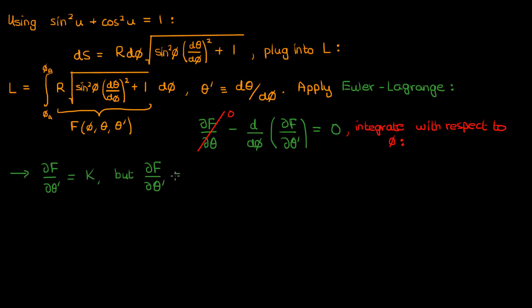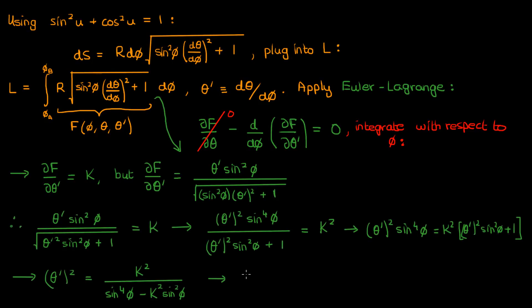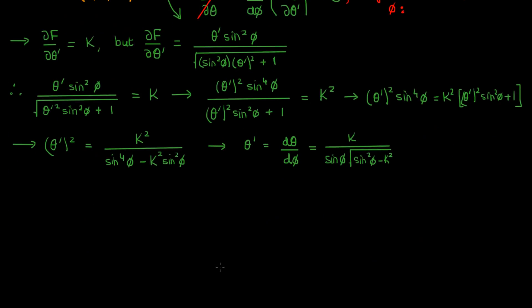We already know the expression for f, so we can evaluate the partial of f with respect to theta prime, which would just be theta prime times sine squared phi over the square root of sine squared phi times theta prime squared plus one. After performing some simplifying algebra, we'll finally end up with this differential equation involving theta and phi: d theta by d phi equals k over sine phi times the square root of sine squared phi minus k squared. If you want to go through the algebra step by step, I recommend pausing the video and having a closer look.